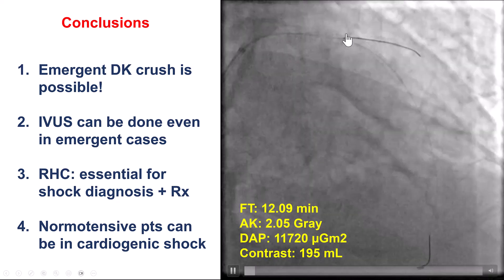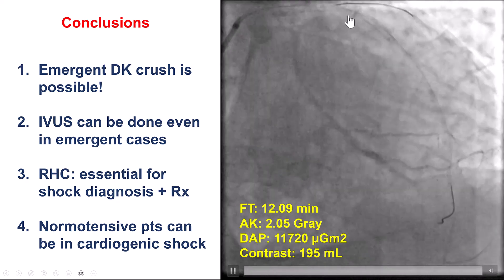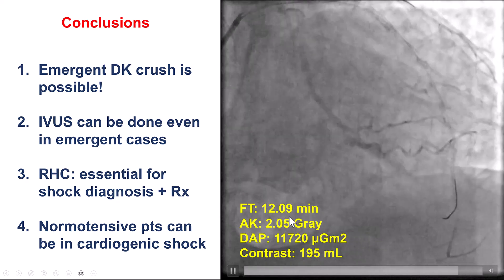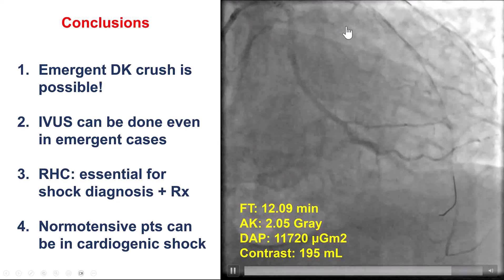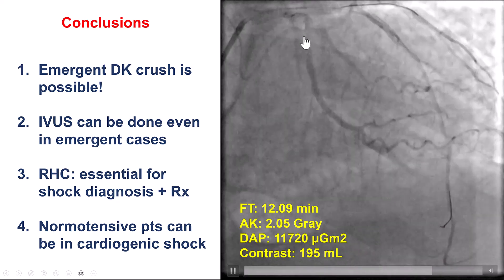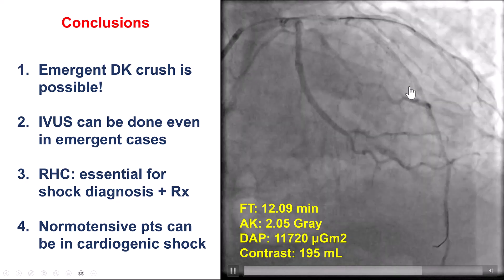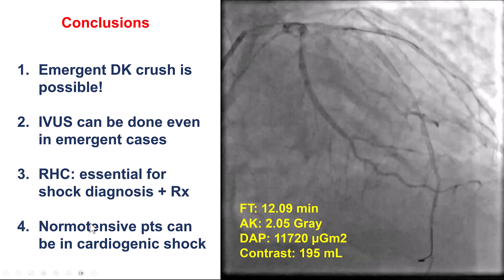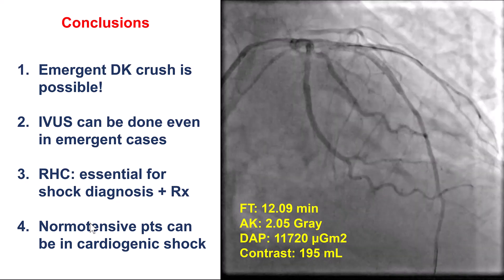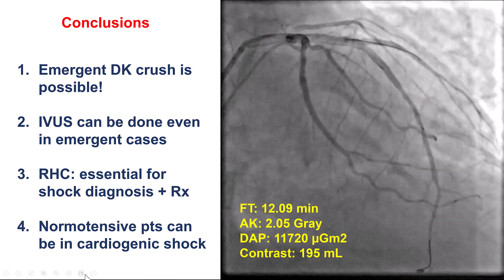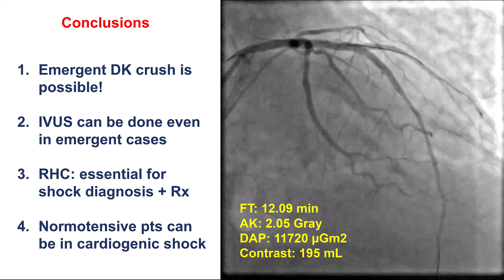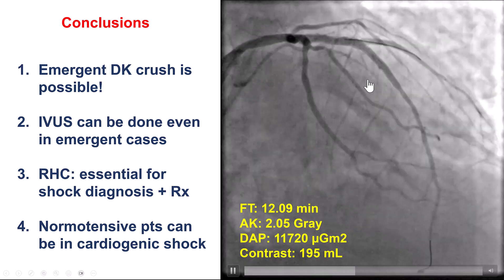Multiple lessons from this case. First, even in emergent cases, a two-stent strategy can be used for bifurcation lesions — in this case, a DK crush — achieved with fairly low fluoroscopy time and radiation dose. What helped was that the lesion was fairly soft and rewirings were easy. IVUS was important to achieve good stent expansion and avoid geographic miss. This patient, although normotensive, was tachycardic, and right heart cath demonstrated a very low cardiac index of 1.4. Right heart cath can be essential for diagnosing shock in patients who maintain their blood pressure. A subsequent echo showed an ejection fraction of 10%, and hemodynamic support was critical for subsequent improvement.